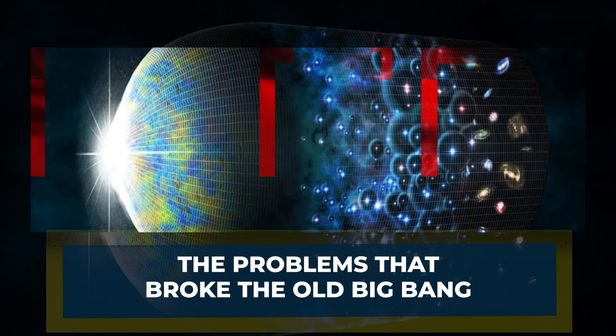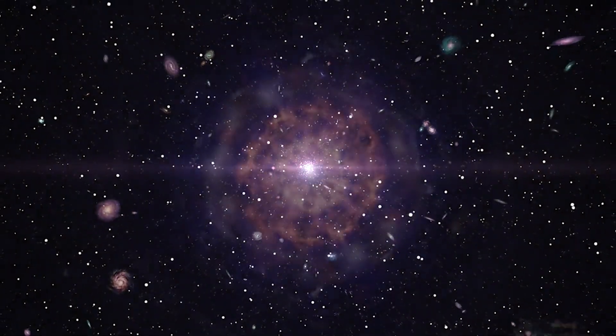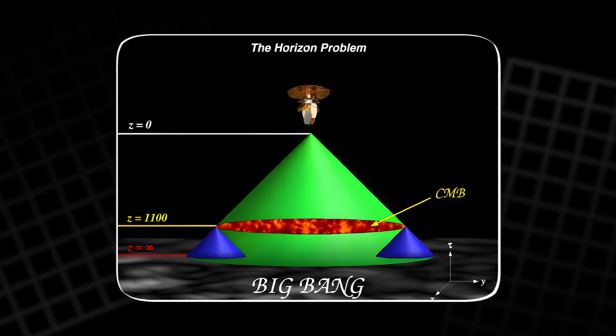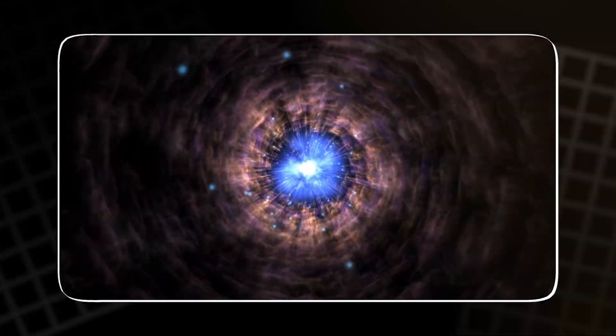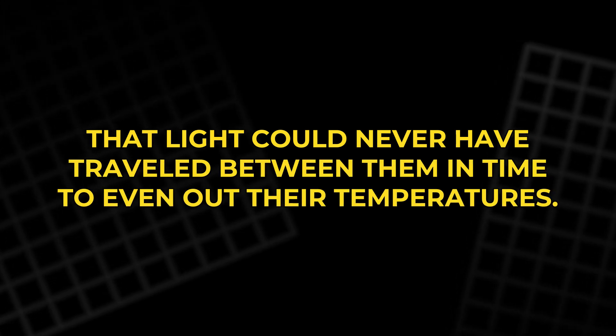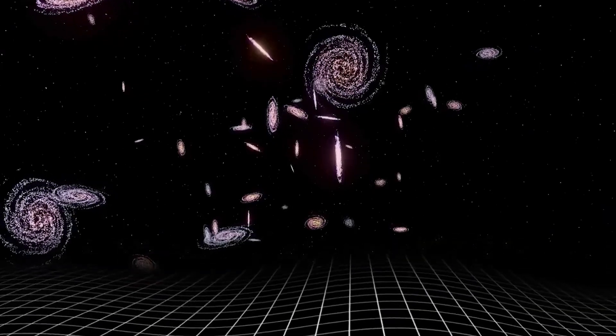They had discovered the oldest light ever recorded. This gave the Big Bang its strongest evidence. But it also uncovered deep problems scientists couldn't ignore. The problems that broke the old Big Bang. Three huge problems shook the classic Big Bang model. The first was the horizon problem. The cosmic microwave background has almost the same temperature everywhere. But opposite sides of the sky are so far apart that light could never have travelled between them in time to even out their temperatures. They should look completely different. But they don't.